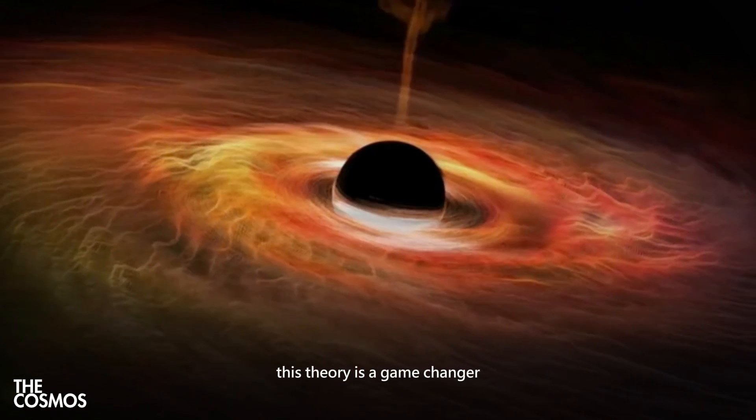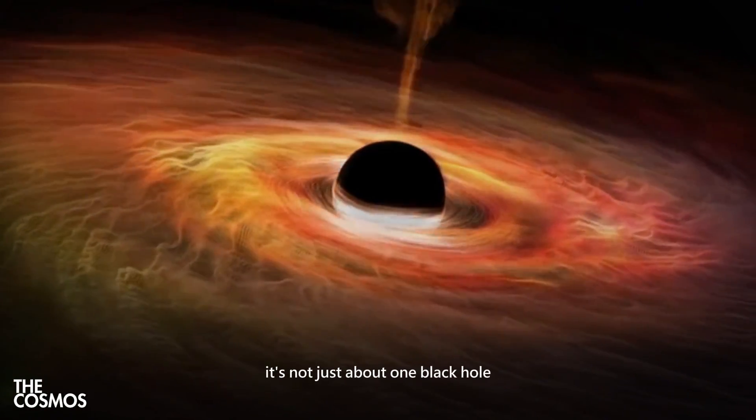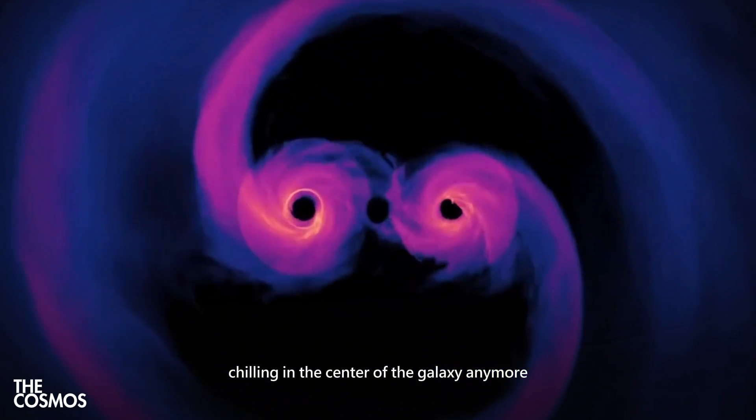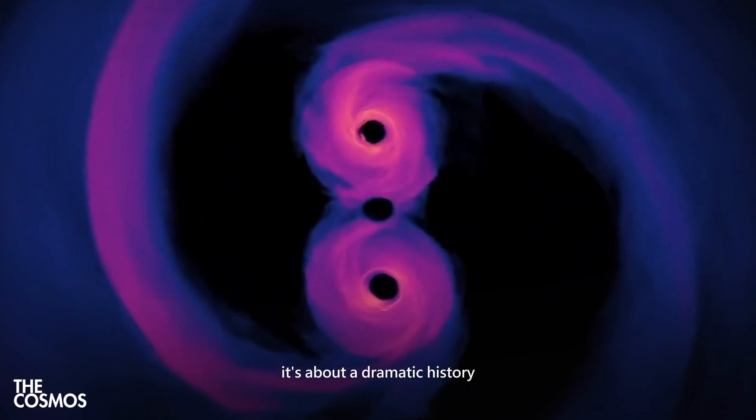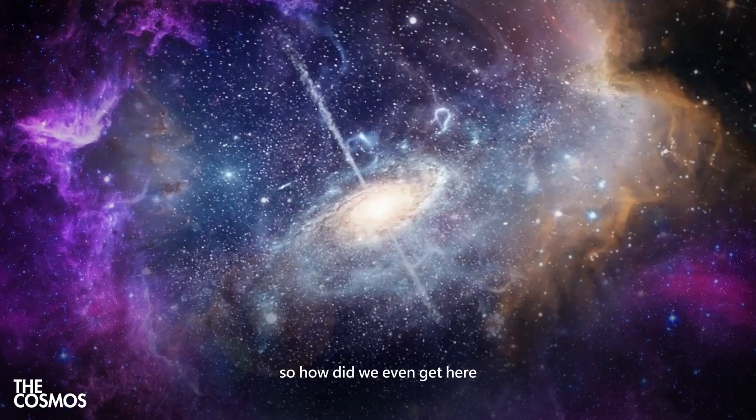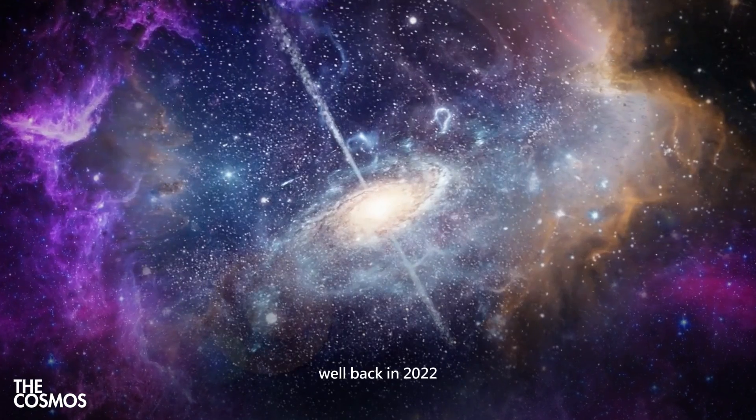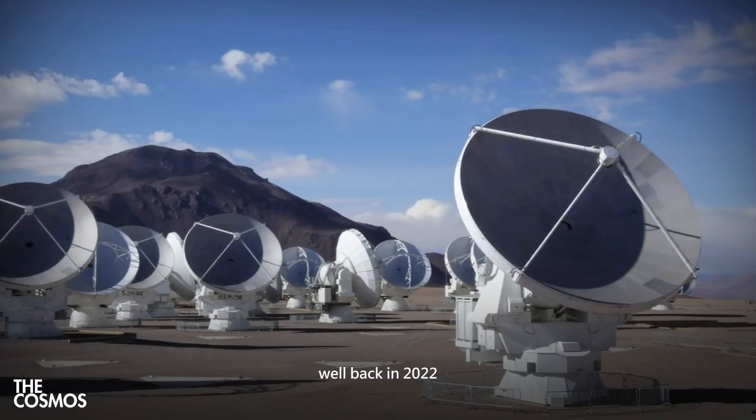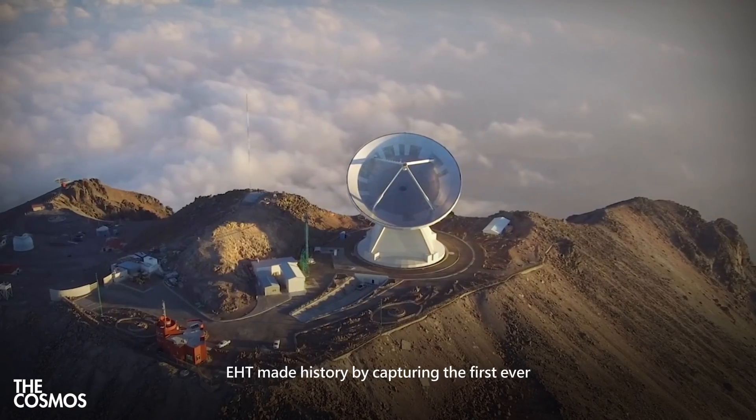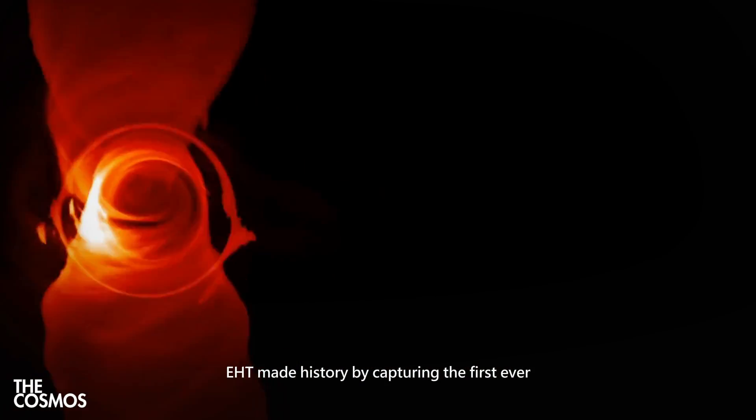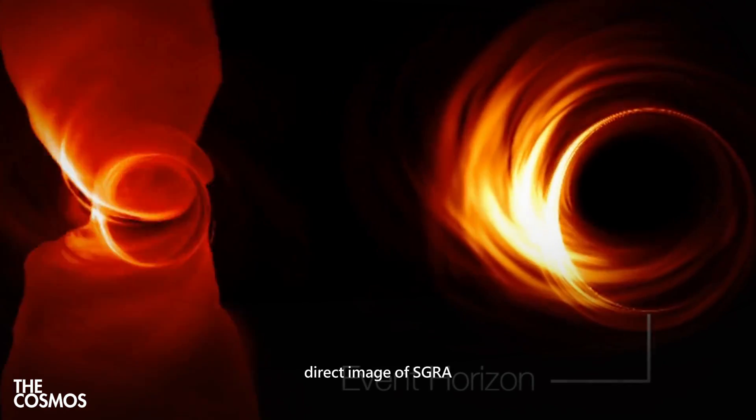This theory is a game changer. It's not just about one black hole chilling in the center of the galaxy anymore. It's about a dramatic history that shaped our entire Milky Way. So, how did we even get here? Well, back in 2022, the Event Horizon Telescope, EHT, made history by capturing the first ever direct image of SGRA.